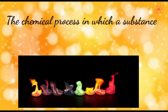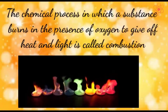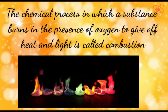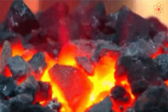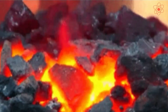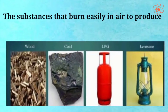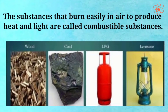The chemical process in which a substance burns in the presence of oxygen to give off heat and light is called combustion. Burning of magnesium and charcoal are examples of combustion. The substances that burn easily in air to produce heat and light are called combustible substances.